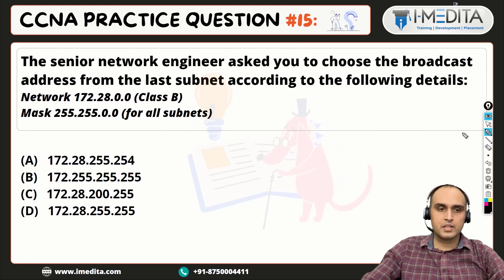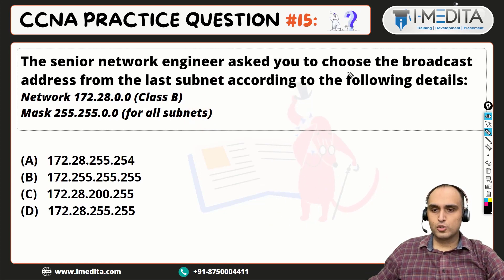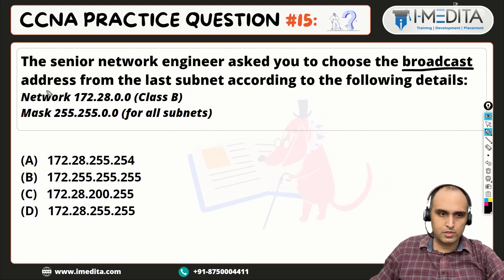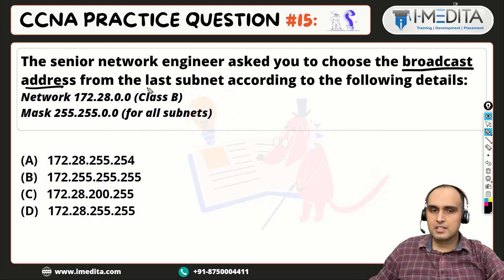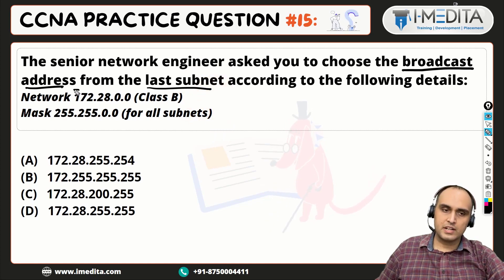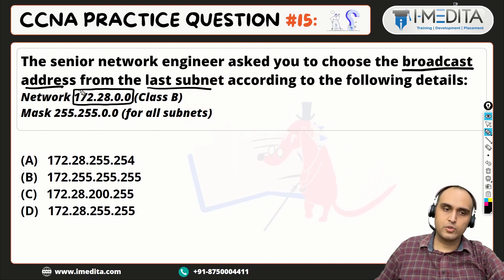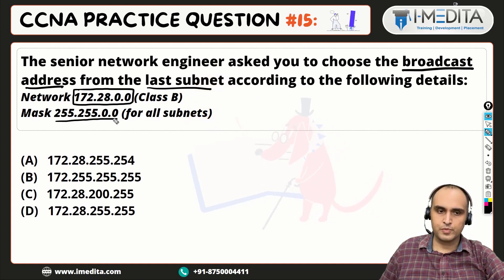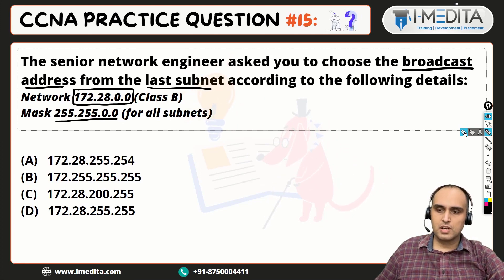The question is that the senior network engineer asked you to choose the broadcast address from the last subnet according to the following details. We have a network of class B, 172.28.0.0, and its mask is 255.255.0.0. Based on this, what is the broadcast address?